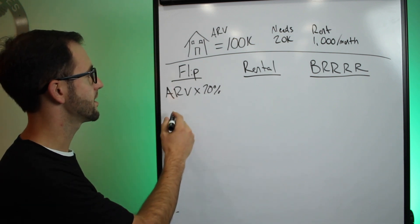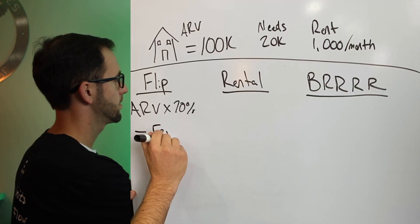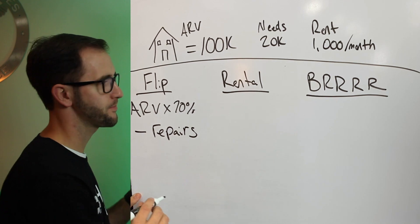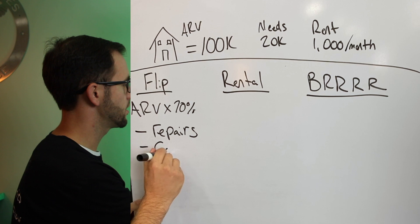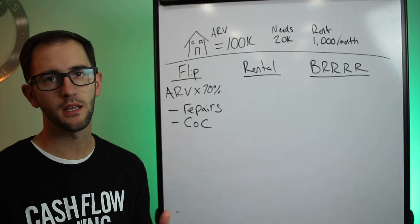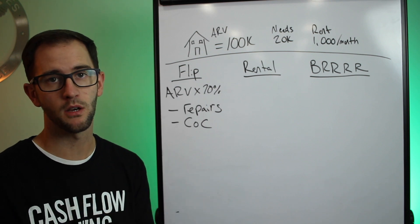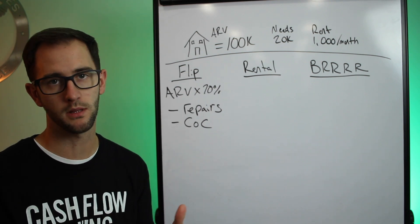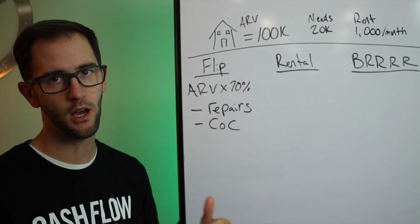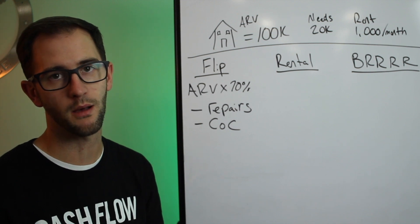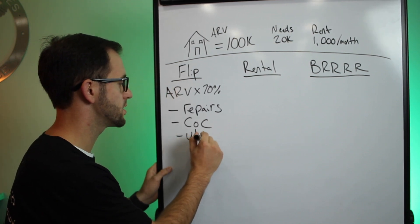All right, so back to the flip. We're going to do ARV times 70%, less repairs. We're also going to back out the cost of capital. I'm just going to use that as COC here. That can be what you're going to be paying in hard money, whether you're going to be paying back a private money note, or if you're taking out a HELOC, what those monthly payments are going to be. I see a lot of people forget about this stage and just back out repairs before they come up with their max allowable offer, or MAO, but you need to factor in cost of capital.